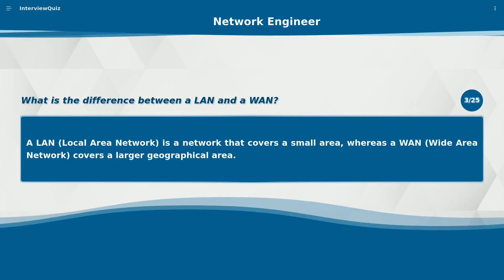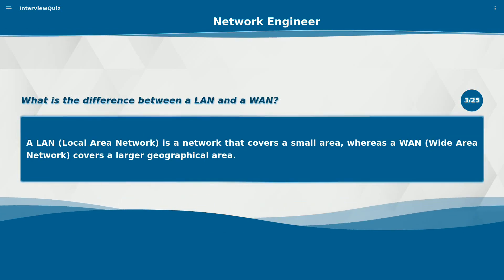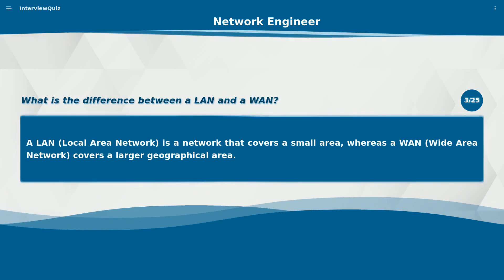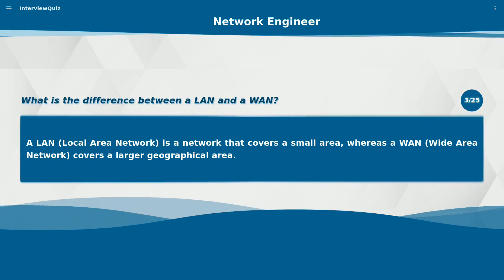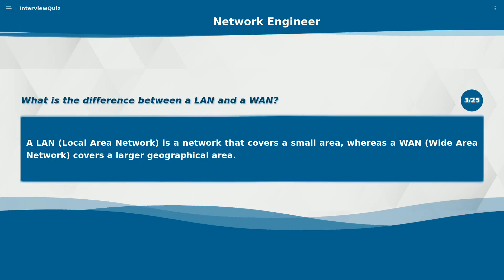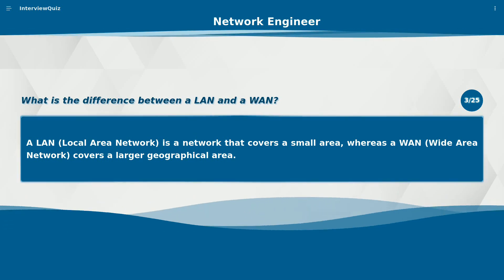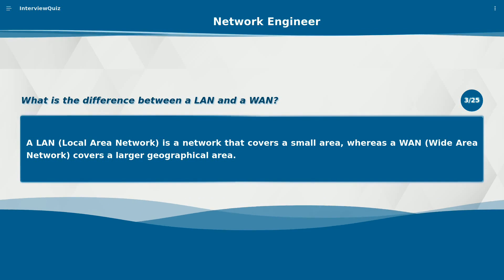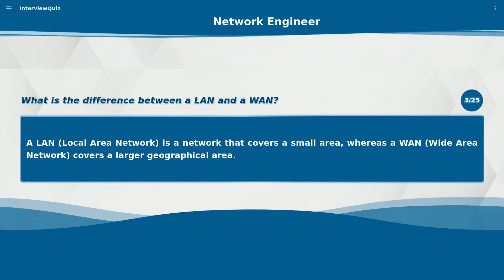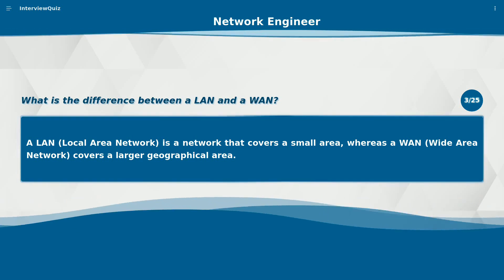What is the difference between a LAN and a WAN? A LAN, local area network, is a network that covers a small area, whereas a WAN, wide area network, covers a larger geographical area.